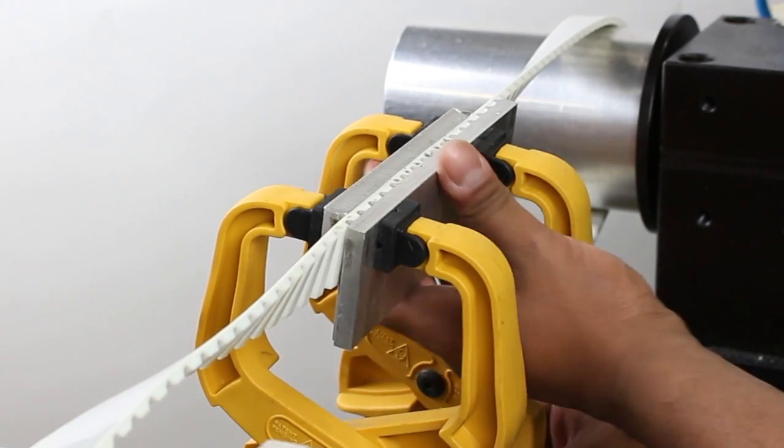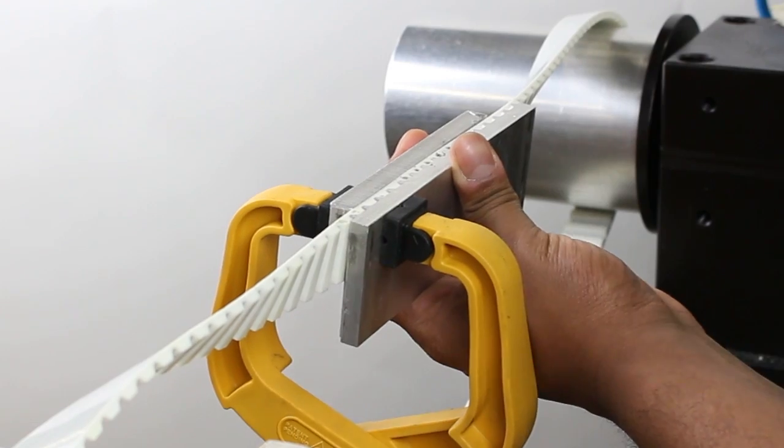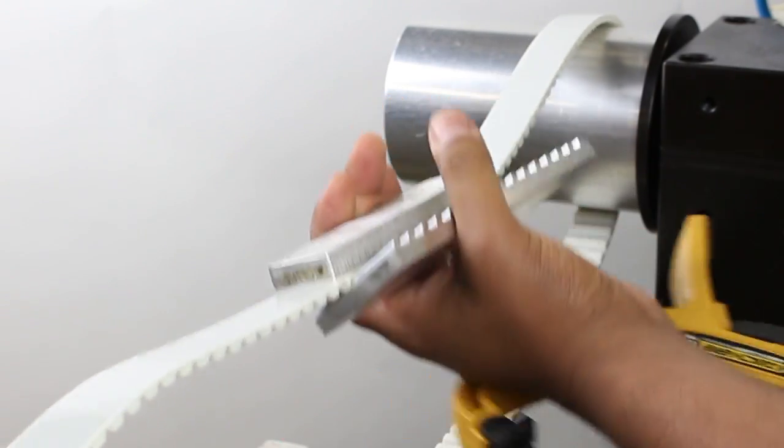Then, you can unclamp your clamps, remove the clamp plate, and you should have a completely assembled belt.